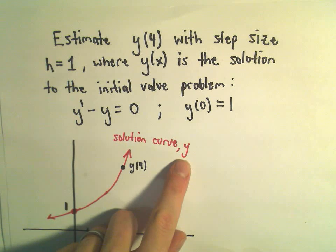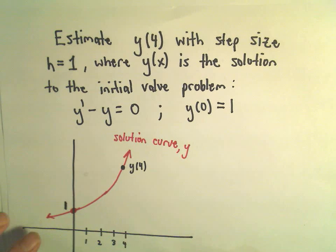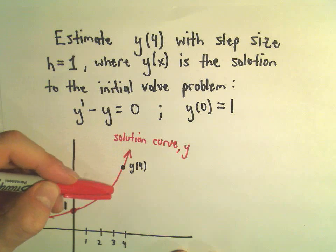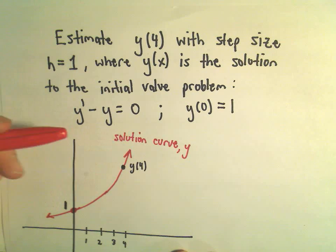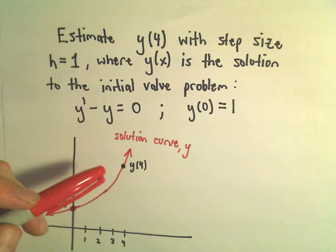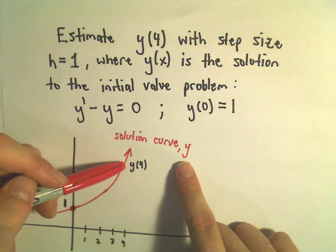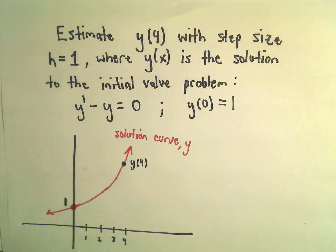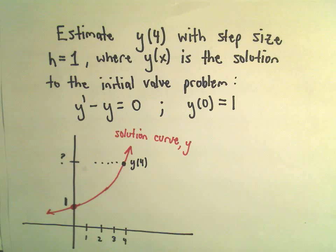So our solution curve y — suppose we don't know exactly what function y satisfies this differential equation. What you can do is make a direction field or slope field, and based on that slope field, the solution curve should look something like this curve in red. To get the value y(4), basically we would need to know the equation — whatever our function y is, we would plug 4 in and that would be the true value. In some cases you can't get that exactly.